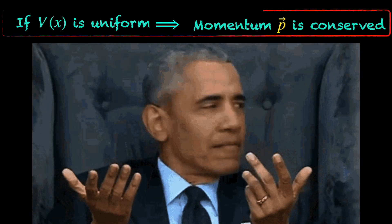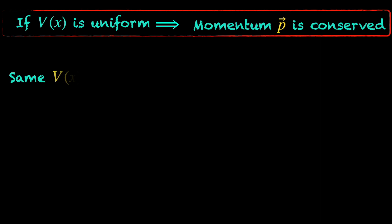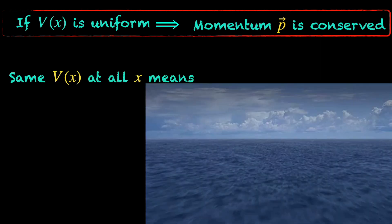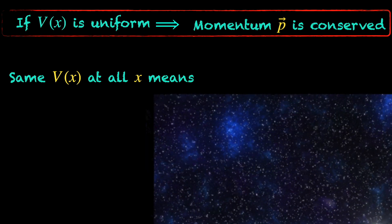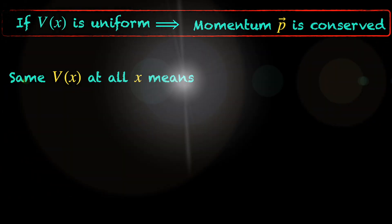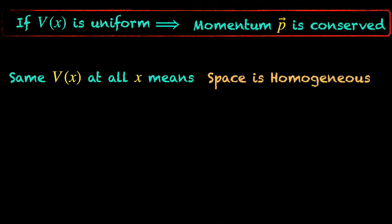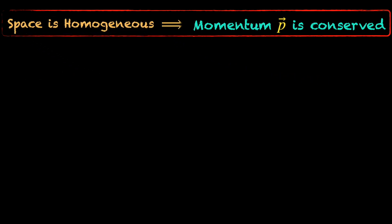What's the big deal in this statement? The big deal is, uniform potential energy of an object across all space means, for that object, any location of space is like every other location. All locations are identical for it, and thus it perceives space as a homogeneous entity. So, we may say, if for a system, space is homogeneous, the momentum of that system is conserved.